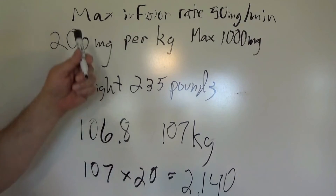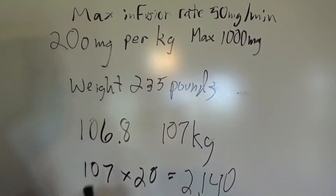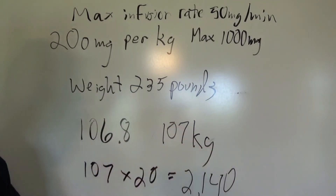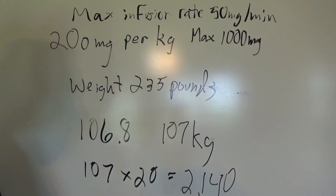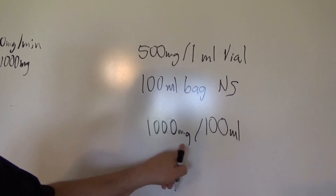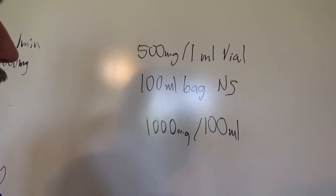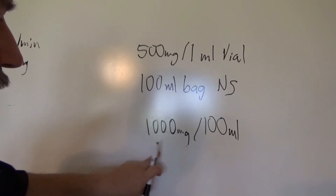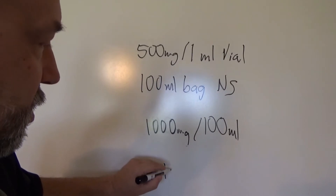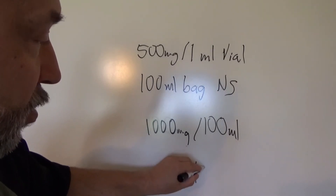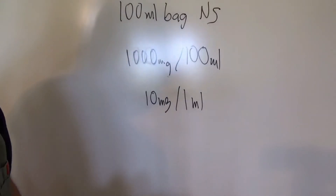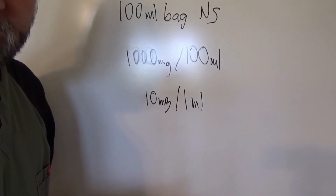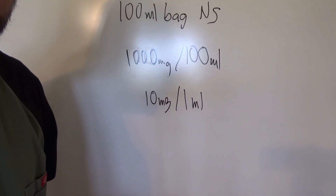The kicker is a maximum infusion rate of 50 milligrams per minute. We can't just dump the 100 ml bag in all at once — we have this infusion rate limit of 50 milligrams per minute. So in order to get that, we've got to do some figuring. I like to do desired dose over dose on hand. We've got 1000 milligrams in 100 milliliters — how many milligrams per milliliter is that? We take 1000 divided by 100: that's 10 milligrams per milliliter.